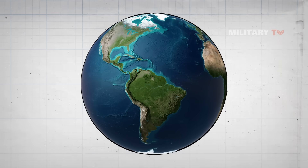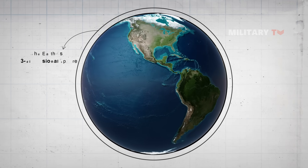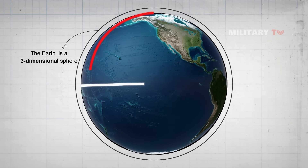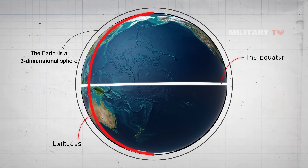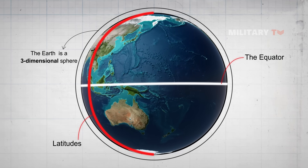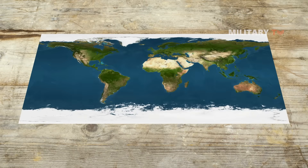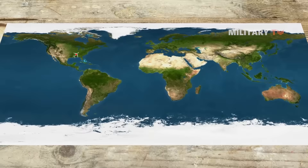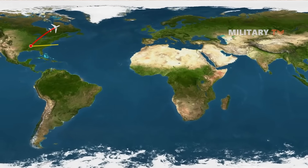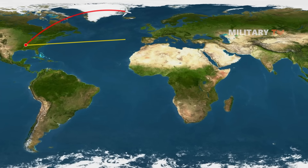The Earth is a three-dimensional sphere, and because of its spherical shape, the circumference of the Earth is much greater around the equator than it is at higher or lower latitudes towards the poles. While we tend to recreate a flat map to represent the Earth, it doesn't reflect the real condition of the planet. That's why when staring at a two-dimensional map, the route taken by flights could be perplexing, as it doesn't take into account the round shape of the Earth.